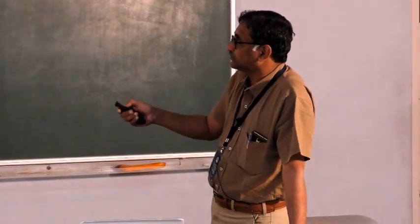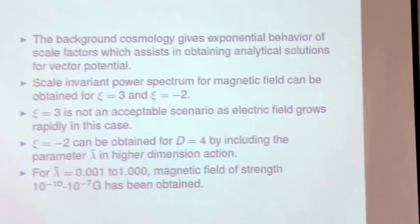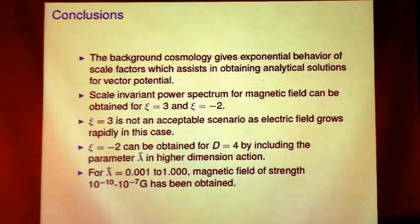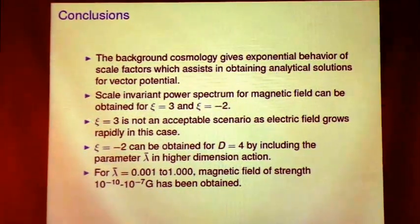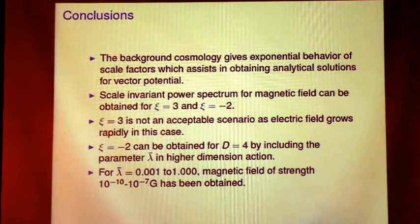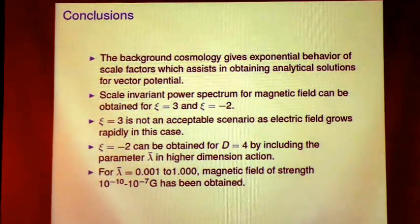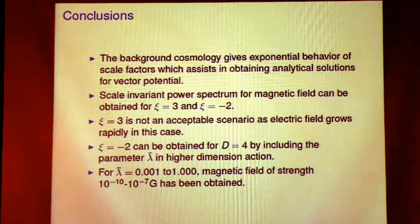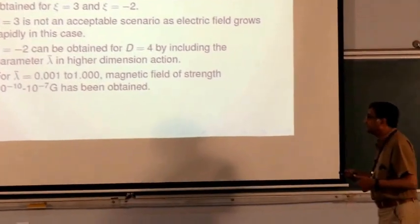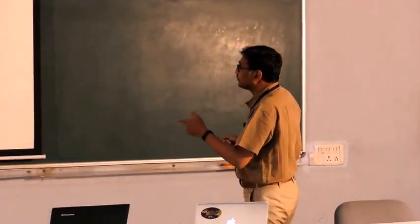Now, when xi is equal to 3, this is not an acceptable solution because when you calculate the electric field power spectrum, that grows rapidly in this case. However, when I have xi equal to minus 2, then one is able to achieve acceptable. Then the scenario becomes acceptable if we take the extra dimension to be 4 and we include a parameter which is the cosmological parameter like term in the higher dimension. And when you have lambda prime in this range, then the magnetic field strength turns out to be between 10 to the power minus 10 and 10 to the power minus 7 Gauss.